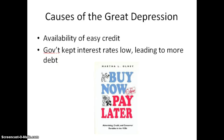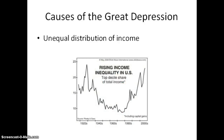The availability of easy credit would also cause a great problem. People began to buy more and more things that they couldn't afford, and the government kept interest rates low, which allowed people to go further and further into debt. Another major cause was the unequal distribution of income. As the rich got richer and the poor got poorer, there were fewer and fewer people to buy the goods that the country was producing.